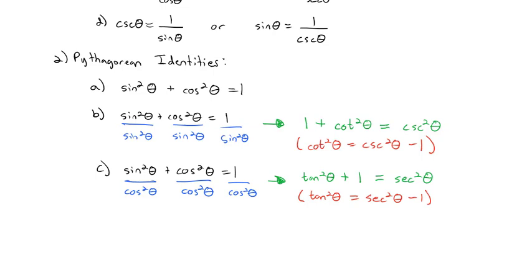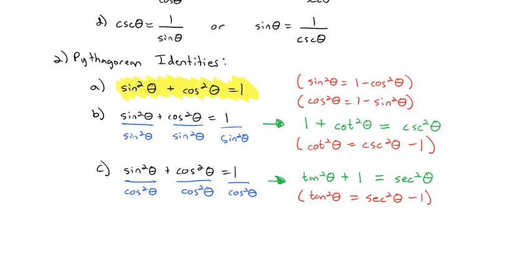Going back to the first identity, we can also solve for sine squared by subtracting cosine squared from both sides, or solve for cosine squared as 1 minus sine squared. Usually, you should at least have memorized sine squared plus cosine squared equals 1, and derive the others by dividing by sine squared or cosine squared. But some people find it helpful to also memorize 1 plus cotangent squared equals cosecant squared, and tangent squared plus 1 equals secant squared.